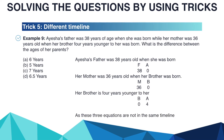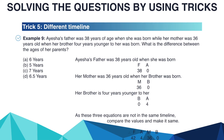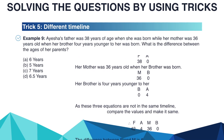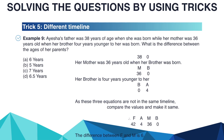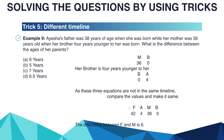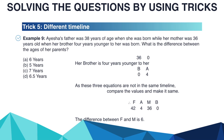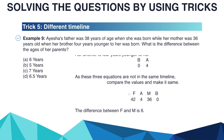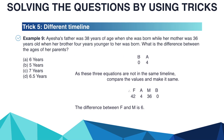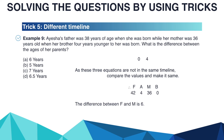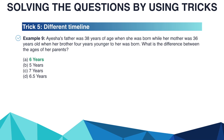As these three equations are not in the same timeline, compare and align the values. Equations 2 and 3 already share the common value B = 0. For equations 1 and 3, there is a gap of 4 years — add 4 to equation 1: F = 42, A = 4. Now all are in the same timeline: F = 42, A = 4, M = 36, B = 0. The difference between father (42) and mother (36) is 6 years. The right answer is option A: 6 years.